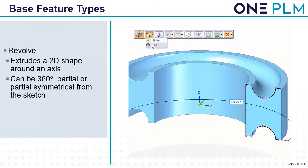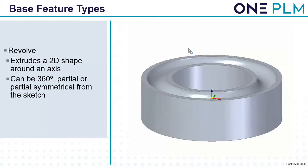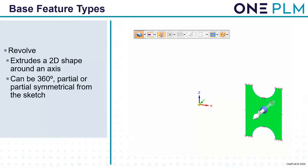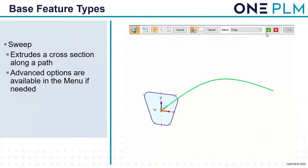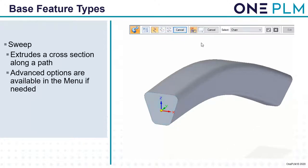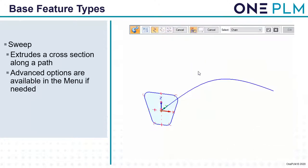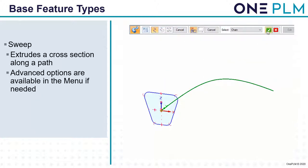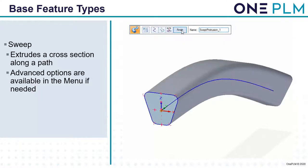The next type of base feature is revolve — we revolve a 2D shape around an axis, 360 degrees, partial, or symmetrical partial from the initial sketch. Next is sweep — this extrudes a cross section along a path. We select the path, accept, select the cross section, and that creates our sweep. Advanced options are available in the floating command bar including the ability to scale, use multiple paths, multiple cross sections, and add twist.